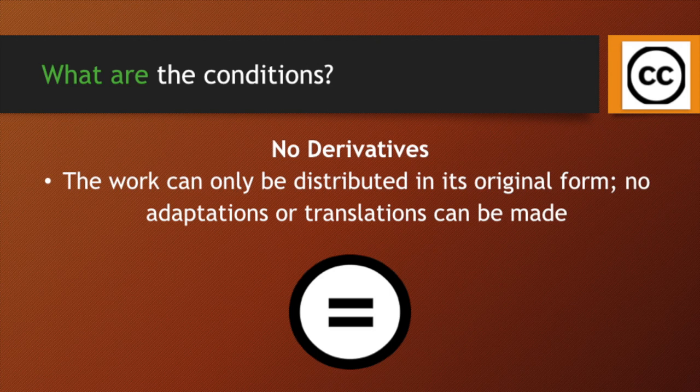What this means is that if I am releasing content on the internet and you are downloading that content, you have to acknowledge the original author for using that content and provide a direct link to it. The second condition may be no derivative, meaning the work can only be distributed in its original form — no adaptation or translation of the work can be made.